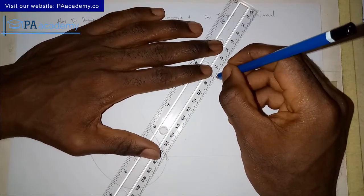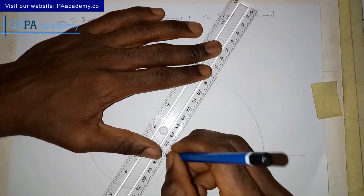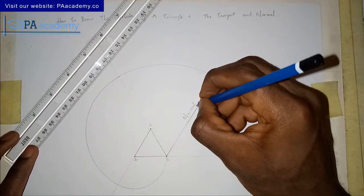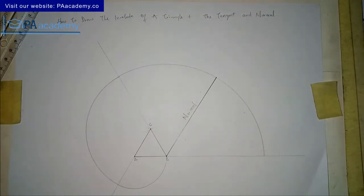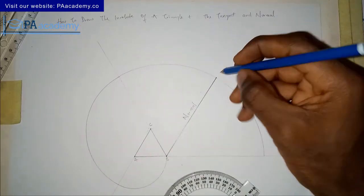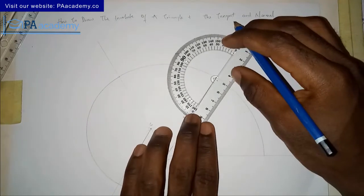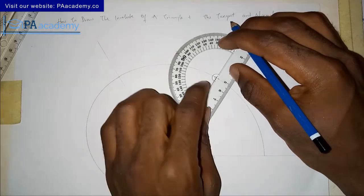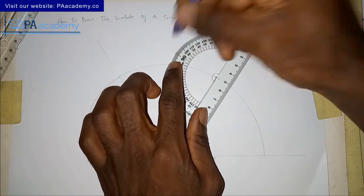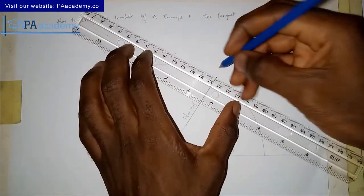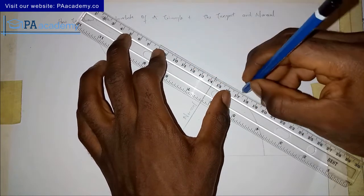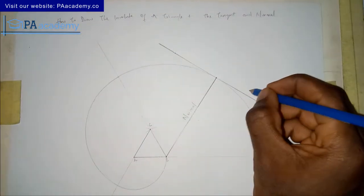To draw the normal from that point, we draw a line straight to point B. This line represents the normal. Now for us to get the tangent, remember that a tangent is at 90 degrees to the normal — they are perpendicular to each other. So bring in your protractor and place it on those points, then measure 90 degrees. Make sure your protractor is properly placed. Draw a line from that 90-degree mark through the point — and with that we already have our tangent.